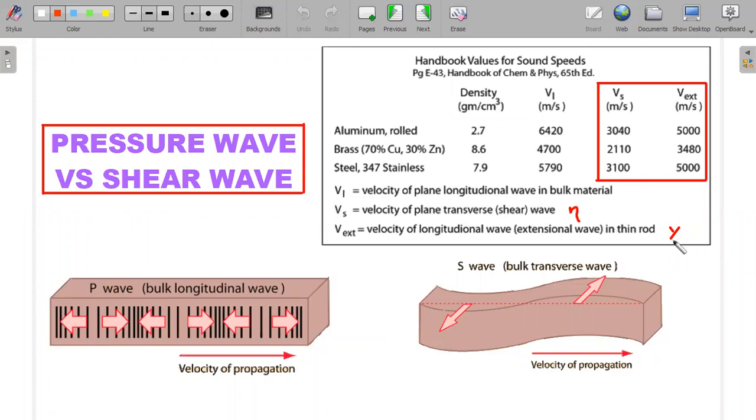Therefore, this bulk wave or the longitudinal wave P wave is going to travel faster as compared to the shear wave. Once you understand that, then you can go back to the previous problem and understand.